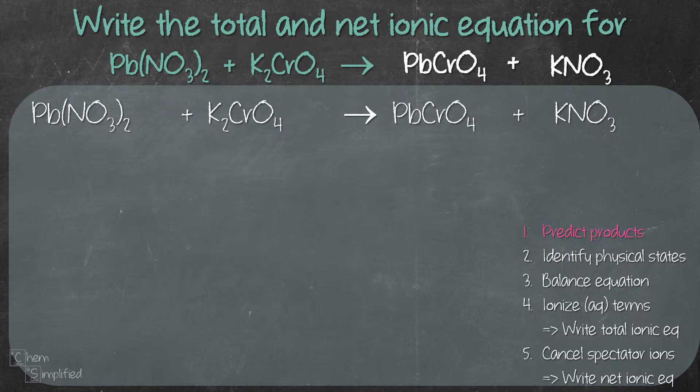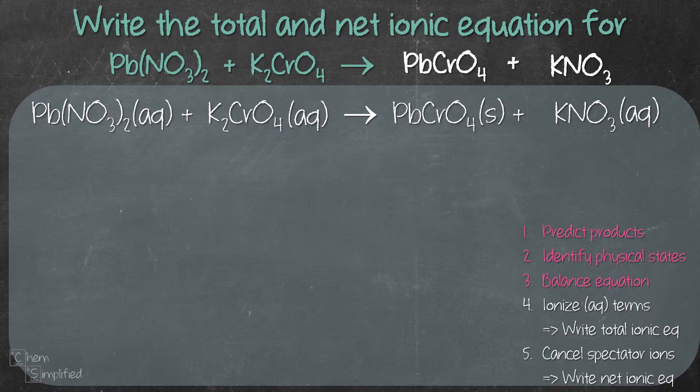Now that we've figured out the products, it's time to move on to the second step: identify the physical states using solubility rules. We have aqueous for lead nitrate, aqueous for potassium chromate, solid for lead chromate, and aqueous for potassium nitrate. Moving on to step 3, we need to balance the equation. We place a 2 in front of KNO₃, giving us the same number of atoms on both sides.